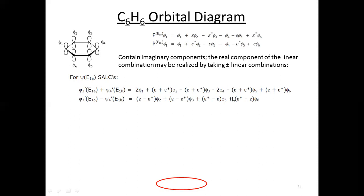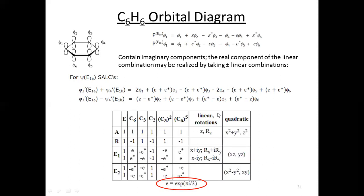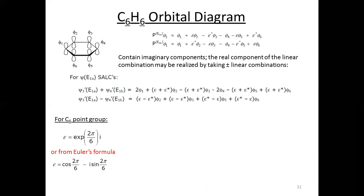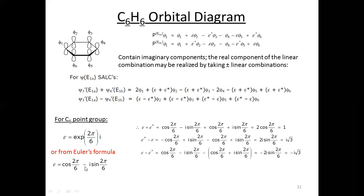So while using this character table, we need to know what epsilon really is. According to Euler's formula, epsilon = cos(2π/n) − i·sin(2π/n). For benzene, n = 6, so epsilon = cos(2π/6) − i·sin(2π/6). And epsilon* is the same except the imaginary part has a positive sign: cos(2π/6) + i·sin(2π/6).